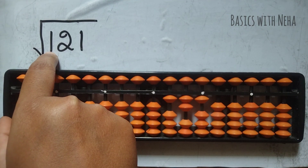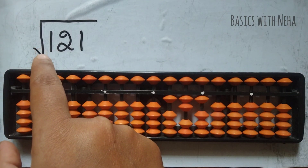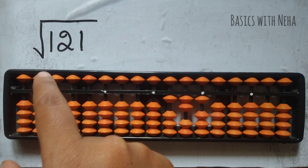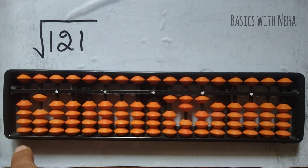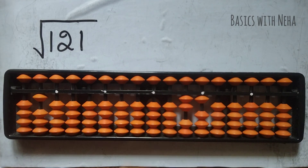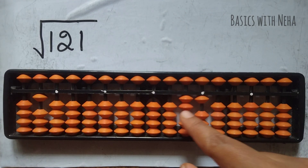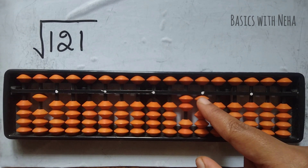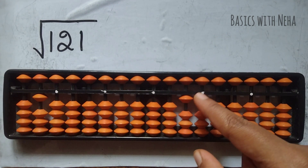For the first number, we consider the first group. Any number when squared that is near to or equal to one — that is obviously one. One squared is one, so I'm going to remove that one from here. Now I have to take half of this number: half of 21 is 10.5, so it will be 10.5.